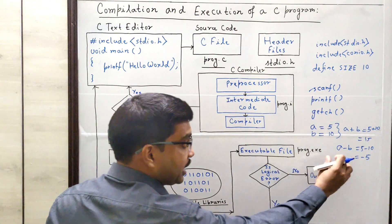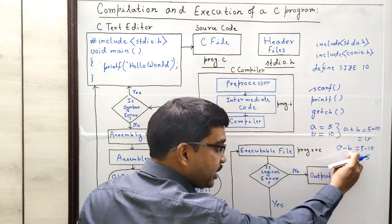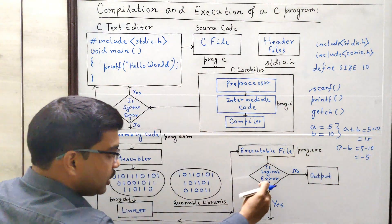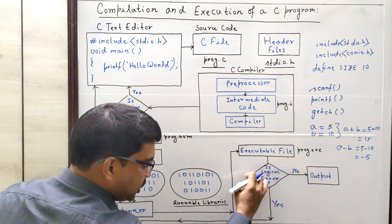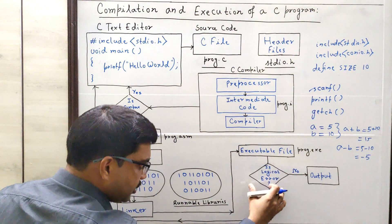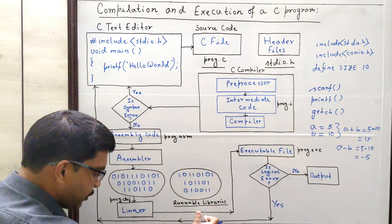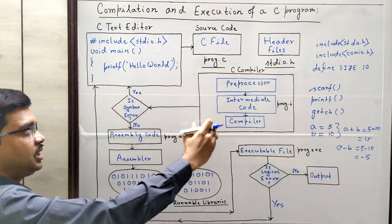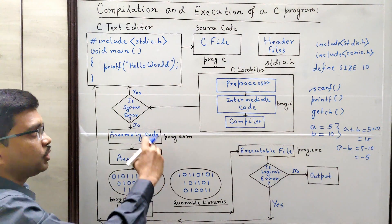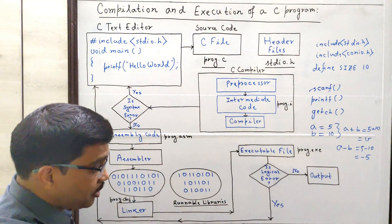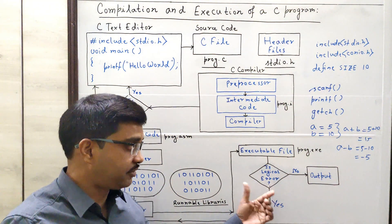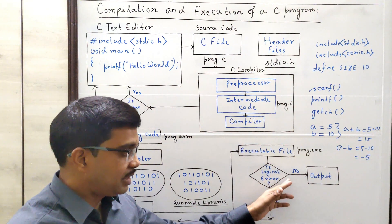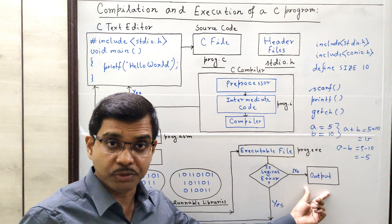So if a logical error is there — meaning you are not getting your desired output — that means something wrong is there. So we have to correct the code from A minus B to A plus B. Again, we have to go to the source code and correct it. In the decision box, we are checking: is there any logical error? If yes, we have to return to the source code, correct it, and take the necessary action so that all the logical errors get removed. When all logical errors get removed and no logical error remains, everything is fine, and we will get our desired output.